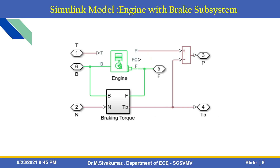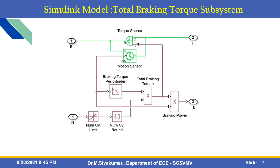The Simulink model has an engine with braking subsystem that calculates the braking torque and engine speed. There are engine type options available: diesel and spark ignition, so you can use both engine types for analysis. The next model is the total braking torque subsystem, where you can calculate total braking torque versus cylinder braking torque per cylinder, and find out braking power versus total power.